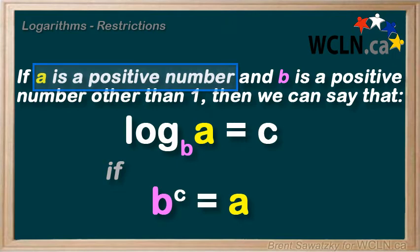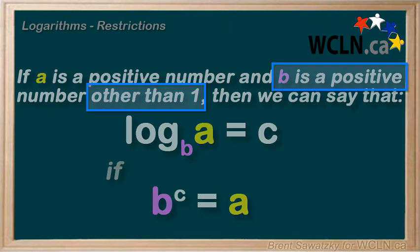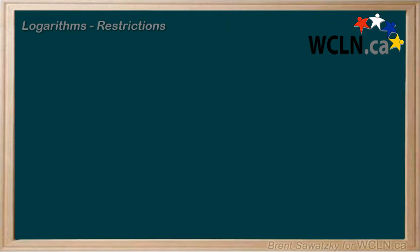So, due to the undependable nature of a negative a here, it's included as a restriction in our definition. Moving on to the next restriction, the b, or the base, is a positive number. With the extra condition of it being other than one. Let's look at the first part of the restriction related to b. Let's try out a negative base.